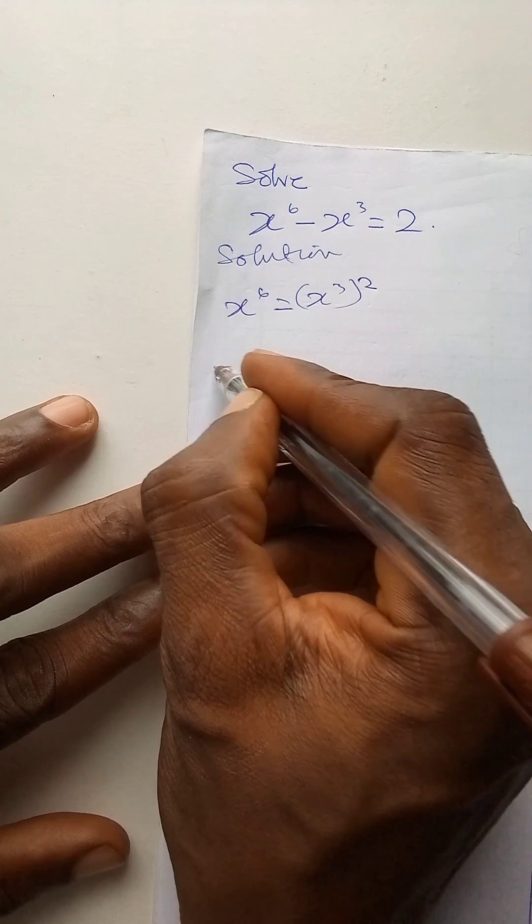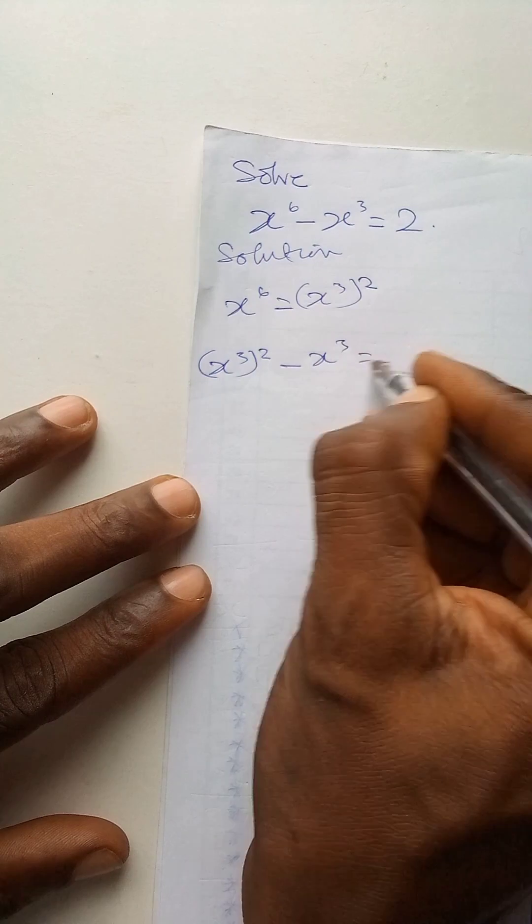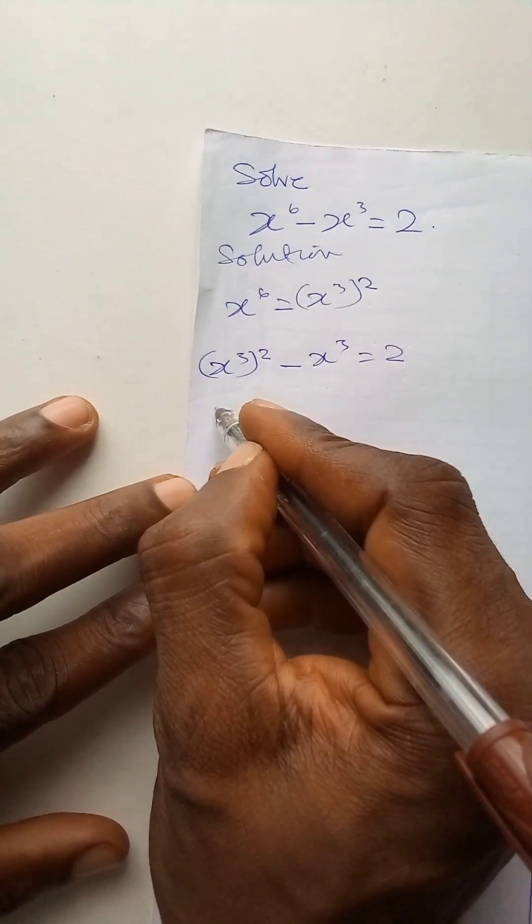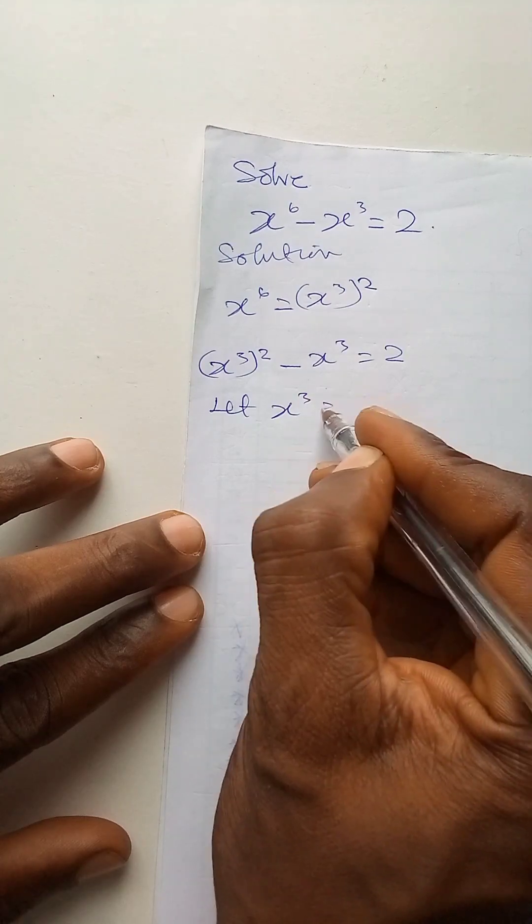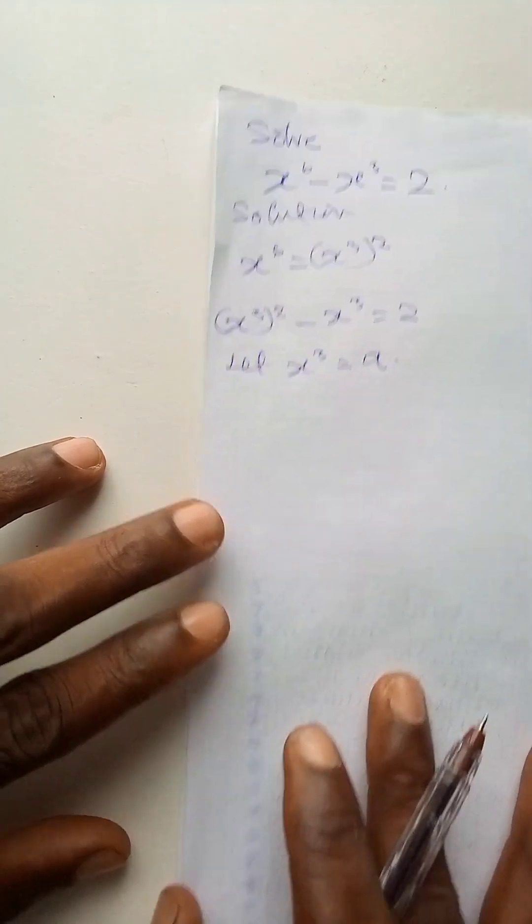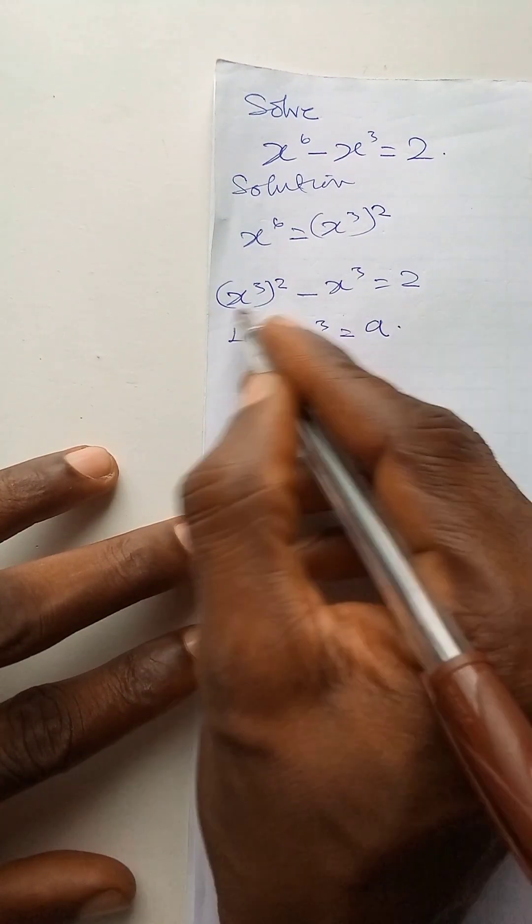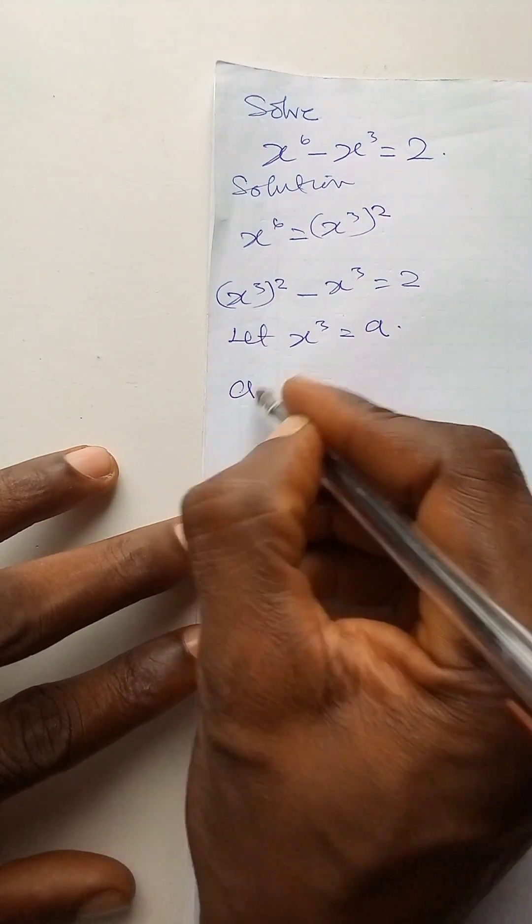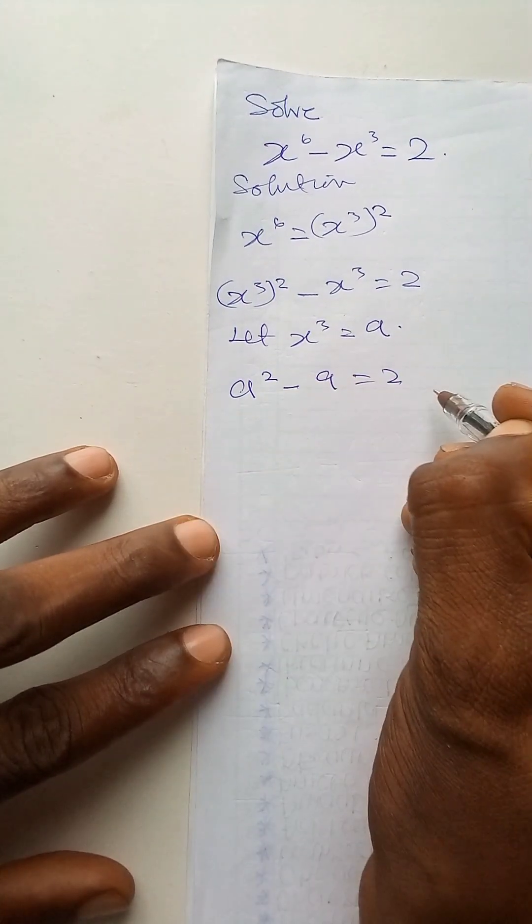That becomes x to power 3 to power 2 minus x to power 3 is equal to 2. Now we make an assumption. Let x to power 3 be a and if that is the case that means that this equation becomes a raised to power 2 minus a is equal to 2. So this is the quadratic equation.